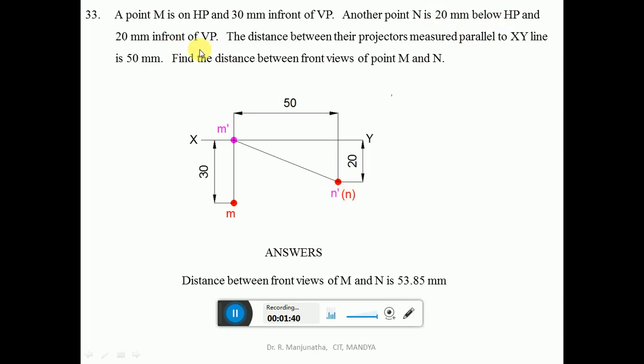And 20 mm in front of VP. In front of VP also comes below X, Y line. Since N dash and N both are overlapping, you keep N in top view in bracket.